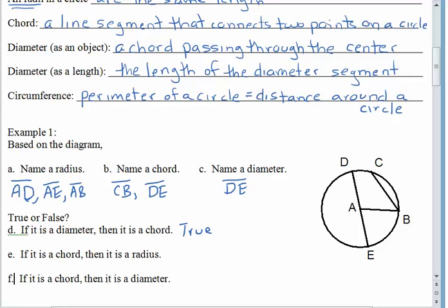Let's see what you have. If it is a chord, then it is a radius. This one is false. A radius will always use the center, and a chord uses two points on the circle. If it is a chord, then it is a diameter. That's also false. Letter D was true, but we can't turn it around the other way.